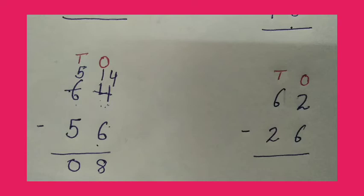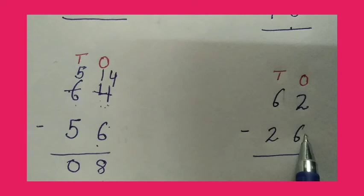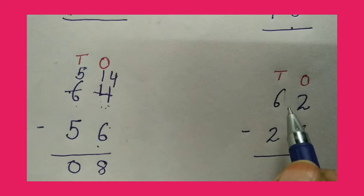In the next sum, we have to subtract 26 from 62. First of all, we will subtract the 1's column. Same here, 2 is a small number and 6 is a big number, so we will borrow 1 ten from 6.